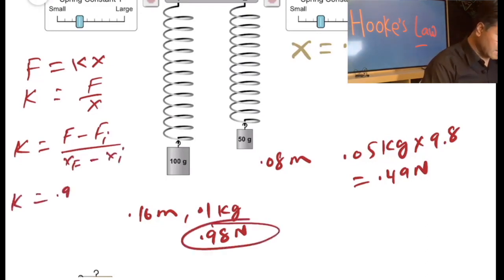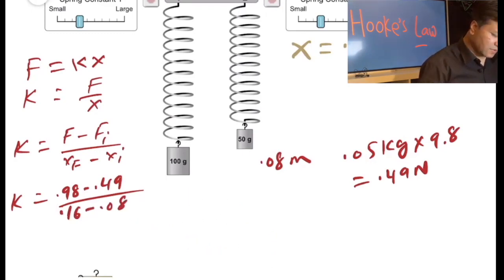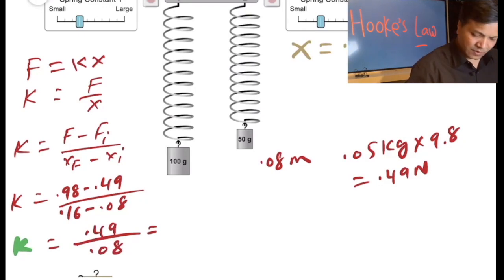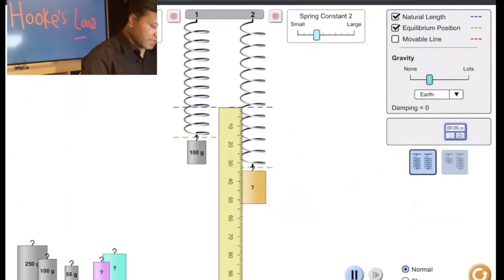So K equals F final—we can say that this is 0.98 minus 0.49, and this one is 0.16 minus 0.08. Let's see what you get: 0.98 minus 0.49 is 0.49. K is equal to 0.49 divided by 0.16 minus 0.08, which is 0.08. So 0.49 divided by 0.08 would be 6.125.